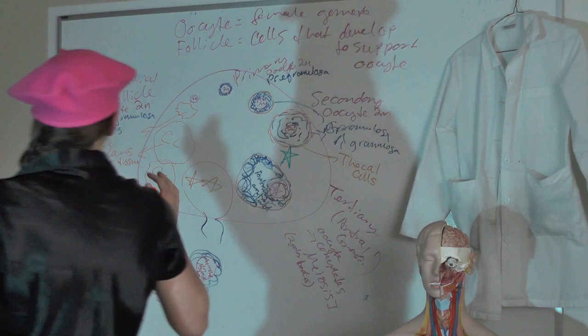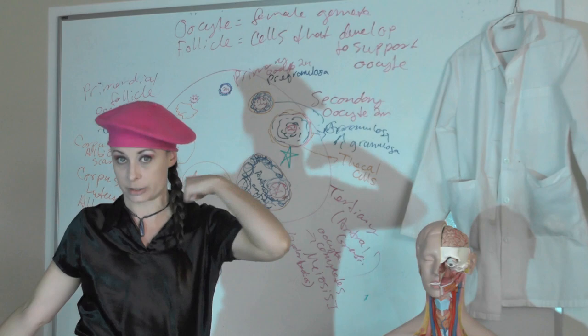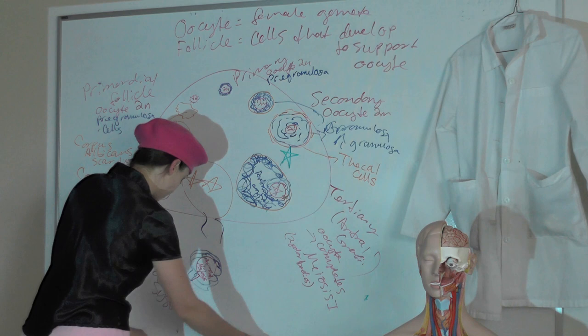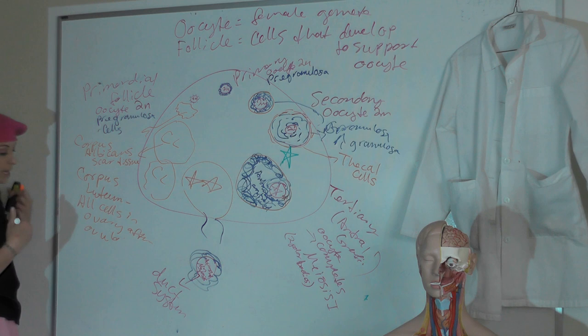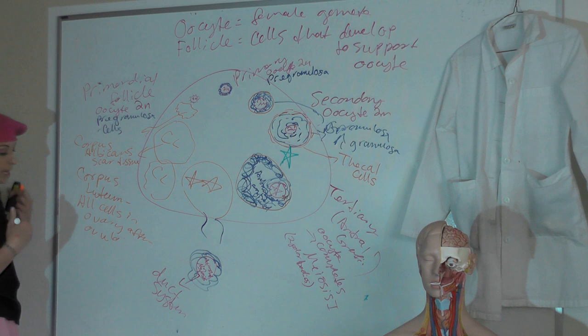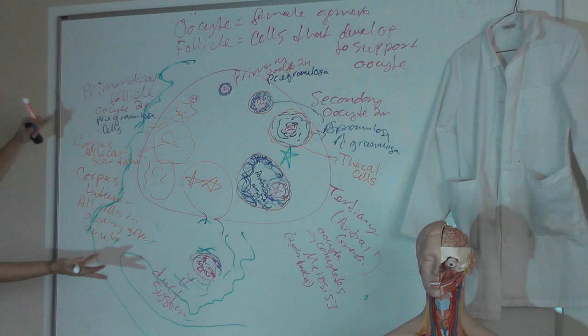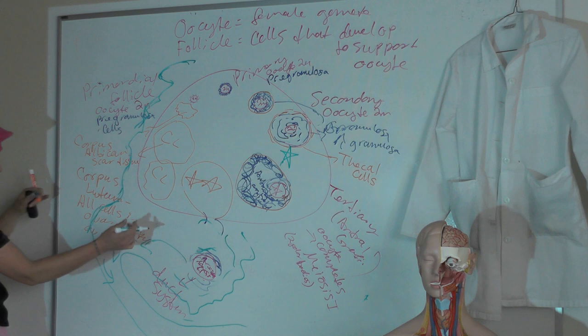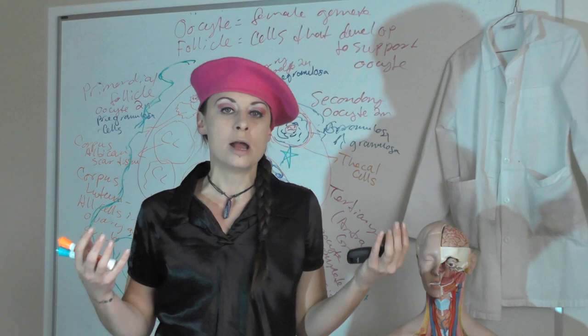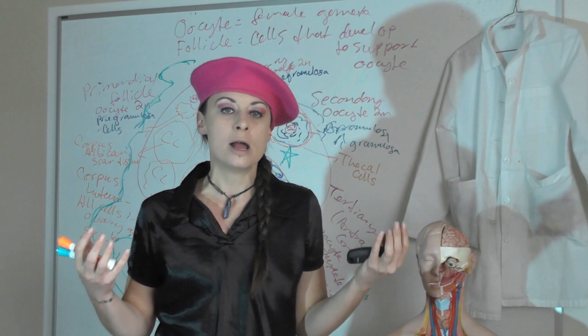That's the anatomy of the ovary — and now we'll talk about the rest of the duct system. Finger-like extensions of the uterine tubes cause a sweeping motion of the interstitial fluid that sweeps the ovulated oocyte into the uterine tube. From the uterine tube, we continue into the uterus, which is the site of gestation. The uterus leads into the vagina. The vagina is the female copulatory organ and birth canal. That wraps up our anatomy — so let's really get into the physiology.